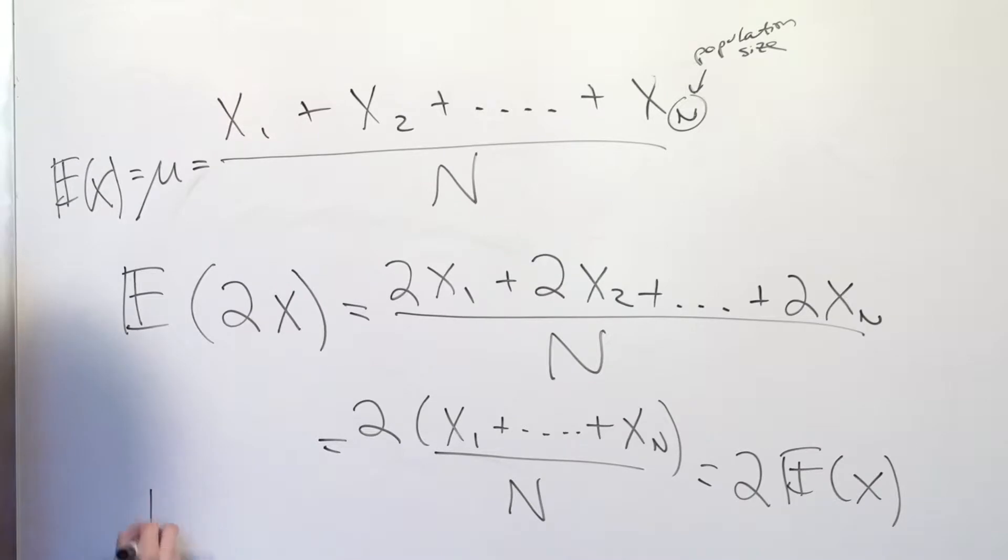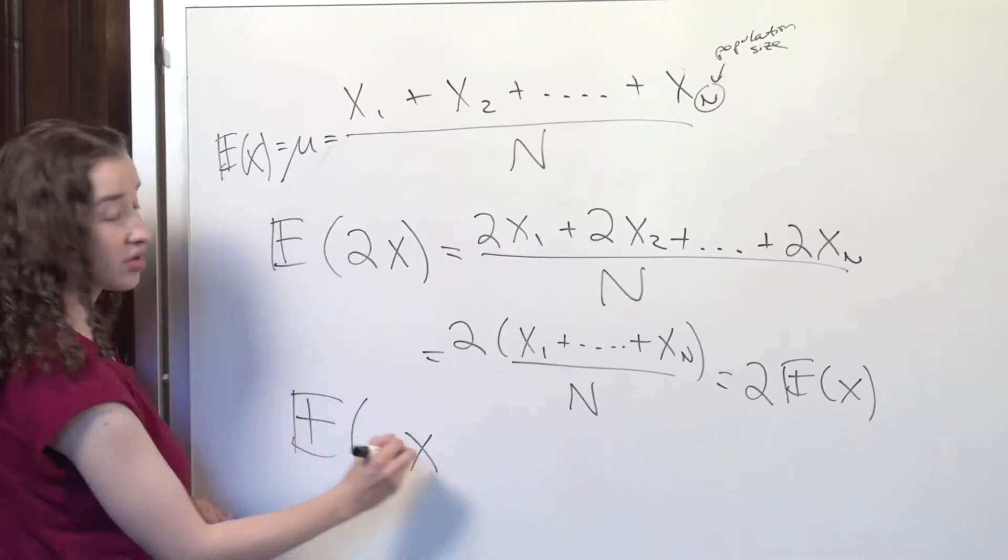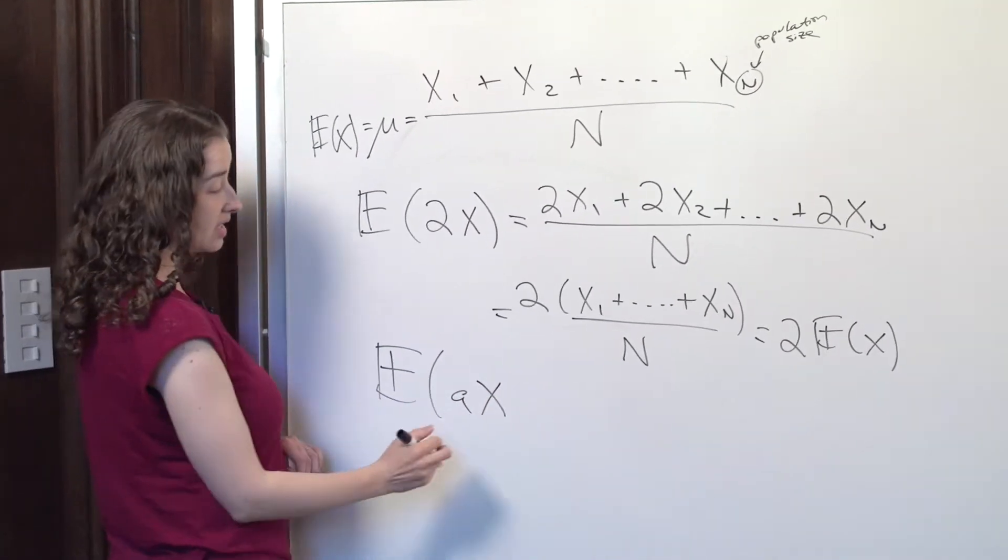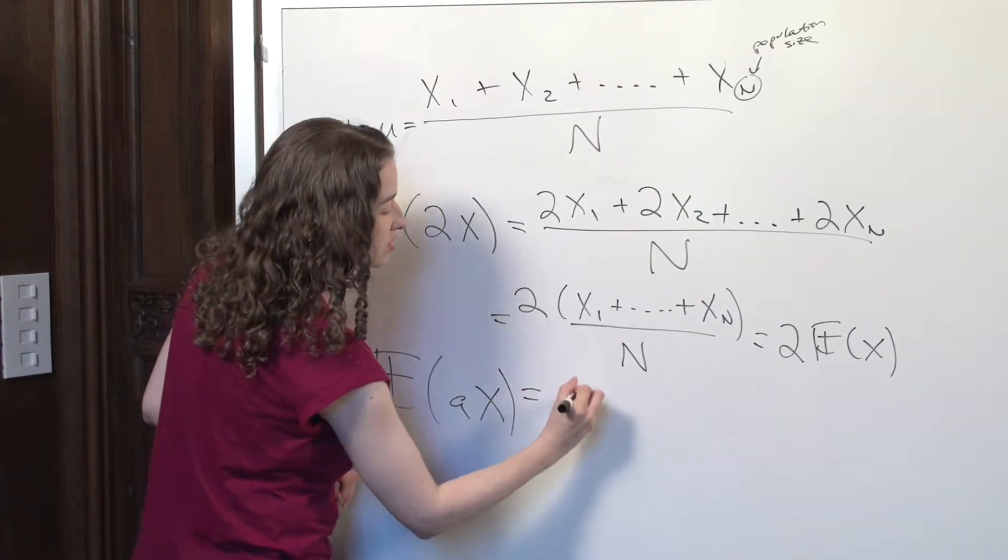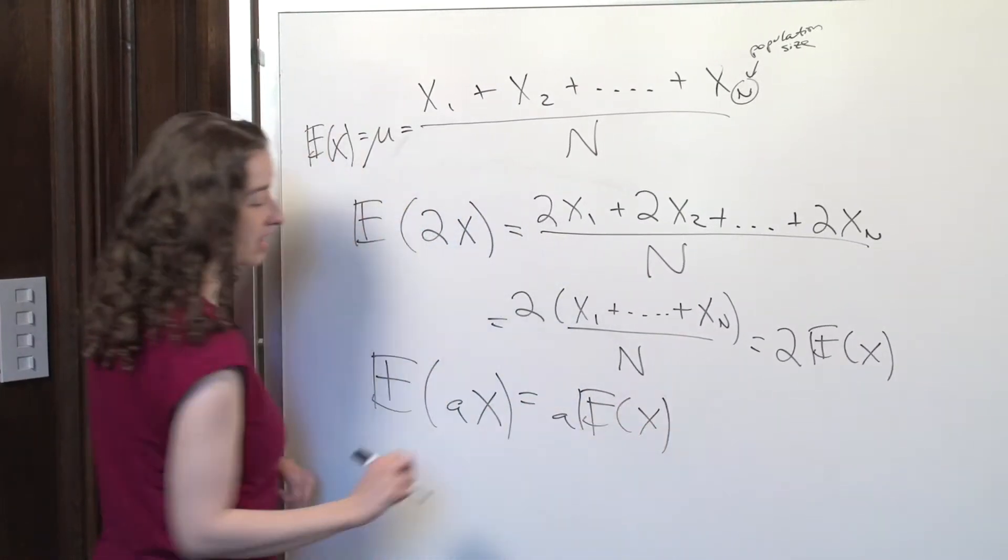which is that the expectation of some number A, some constant A, times X, is equal to A times the expectation of X.